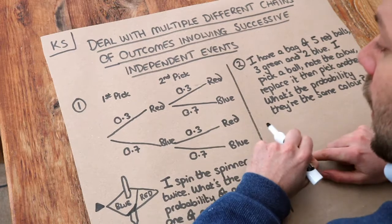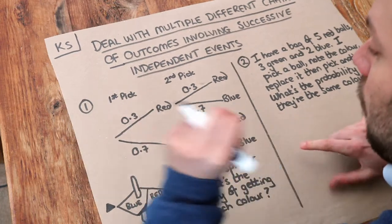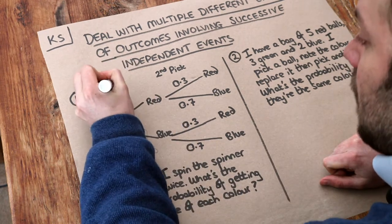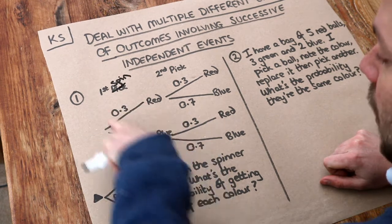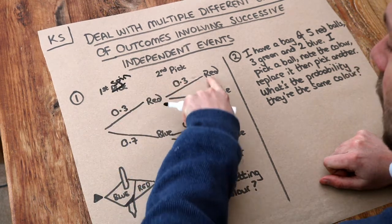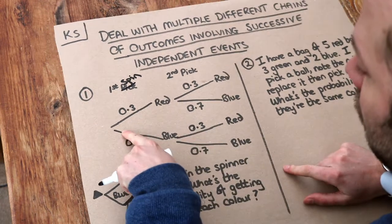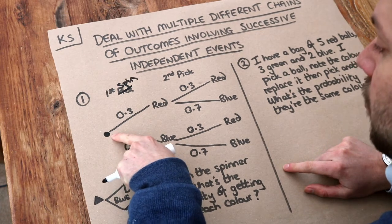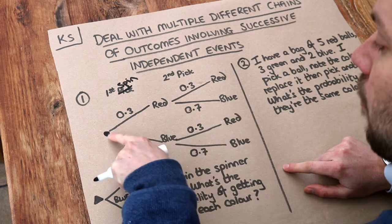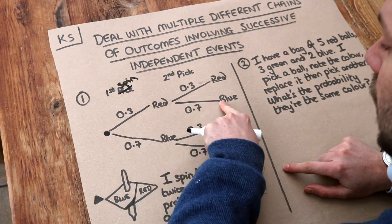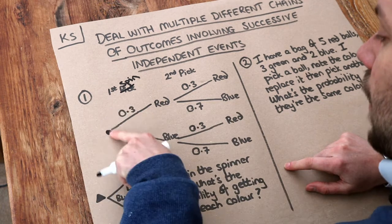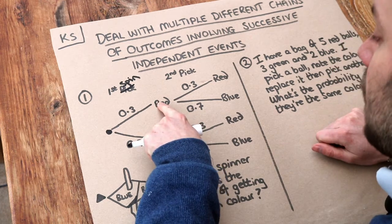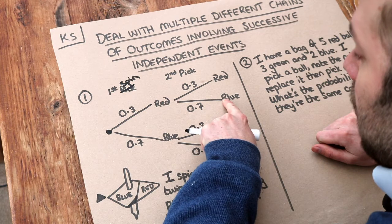We've got a probability tree here, and what the tree represents is the different possible sequences of events that could happen. So we've got two spins of a spinner. On the first spin we could get red or blue, and then on our second spin we again could get red or blue. A particular path through this tree from left to right represents that sequence of outcomes. So for example, going red and then blue represents picking red on the first spin and then blue on the second. That means a probability of 0.3 of getting red on the first spin, and then if we spun red, a probability of 0.7 of getting blue on the second spin.